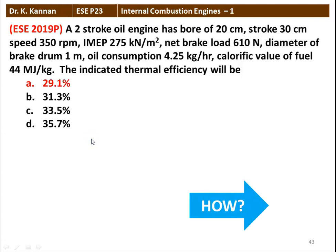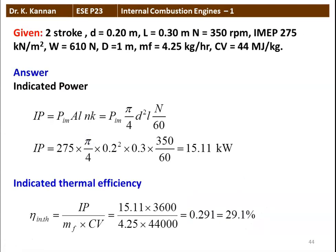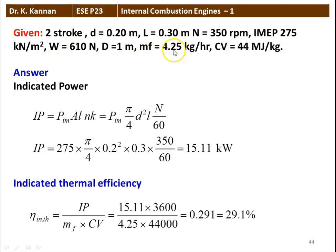We will see how in the next slide. Given data: 2-stroke cycle engine, diameter equal to 0.2 meter, stroke length equal to 0.3 meter, speed equal to 350 rpm, IMEP 275 kilonewtons per meter square, load 610 Newton, diameter of the drum 1 meter, mass of the fuel 4.25 kilograms per hour, calorific value 44 megajoules per kilogram.